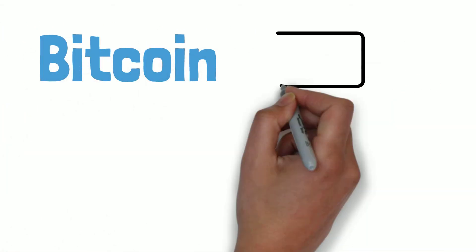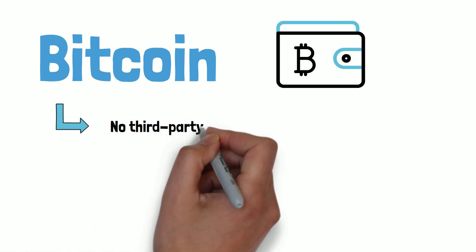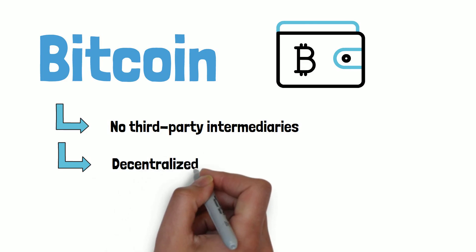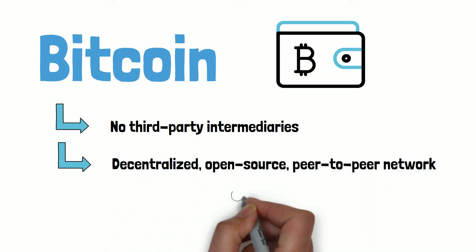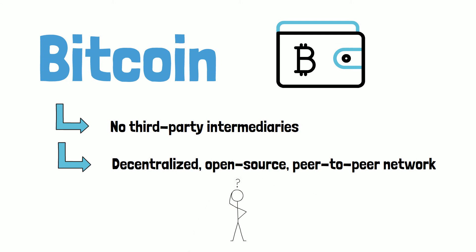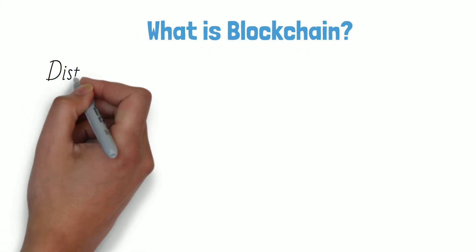Following years of trial and error by programmers, Bitcoin was the first engineering solution that allowed for digital payments without having to rely on a third-party intermediary. Bitcoin is a decentralized, open-source digital currency that can be sent between users on a peer-to-peer network without the need for intermediaries. It was developed in 2009 by an anonymous person under the name Satoshi Nakamoto. Transactions are verified in a public distributed ledger called blockchain. So what is blockchain?